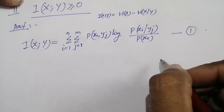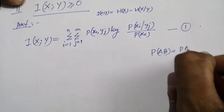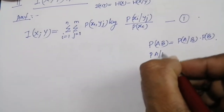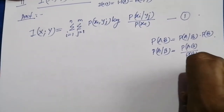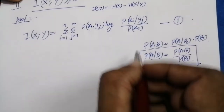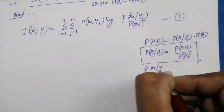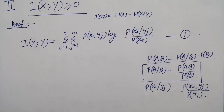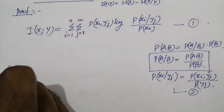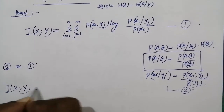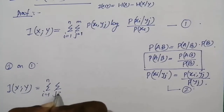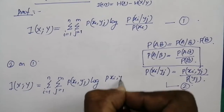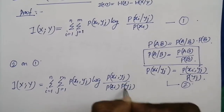We know that p(a,b) = p(a|b)·p(b), so p(a|b) = p(a,b)/p(b). Using the same concept, p(xi|yj) = p(xi,yj)/p(yj). This is equation number two. Applying equation two to equation one gives I(x;y) equal to the double summation over i from 1 to n and j from 1 to m of p(xi,yj) log(p(xi,yj) / (p(xi)·p(yj))).